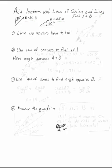Adding vectors with the laws of cosines and sines. We want to add the vector A, which is 30 pounds at 30 degrees from the vertical, and B, which is 25 pounds at 20 degrees from the vertical. Find the resultant, A plus B.